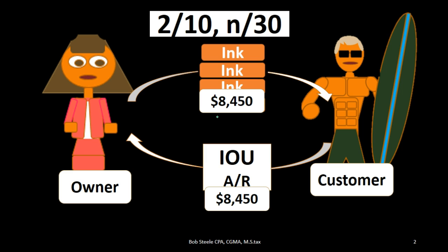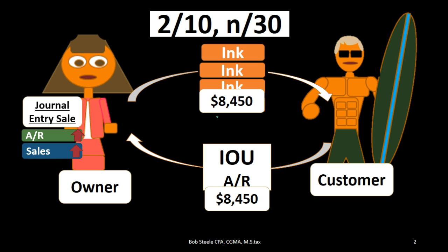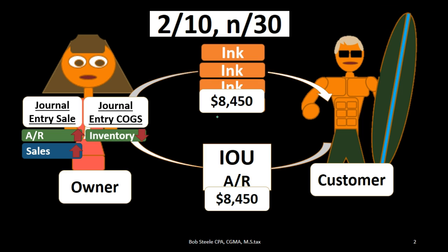The original journal entry will have two parts. The sales side: accounts receivable goes up — we have the IOU from the customer for the full $8,450 — and sales goes up. The cost of goods sold side: inventory goes down and cost of goods sold goes up. That means we recorded sales at the full price of $8,450 and we record the receivable at $8,450.